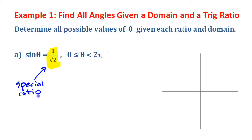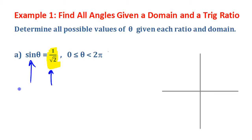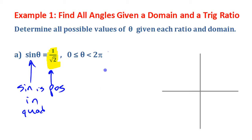First, we need to think: this is the sine ratio and it's a positive value. Sine is positive in quadrants one and two. Since we're allowed to look all the way from 0 to 2π, it's going to be in more than one quadrant — quadrants one and two.